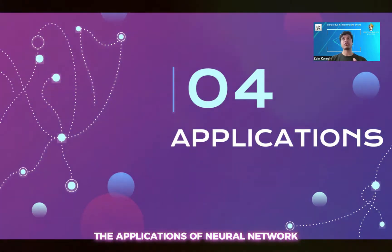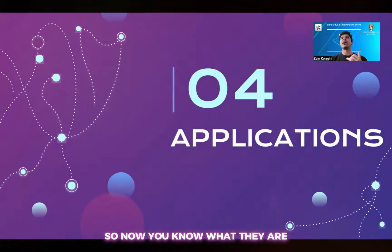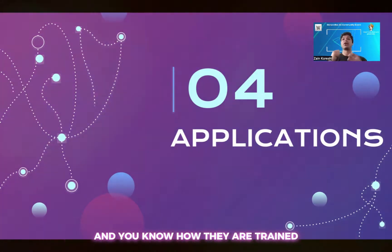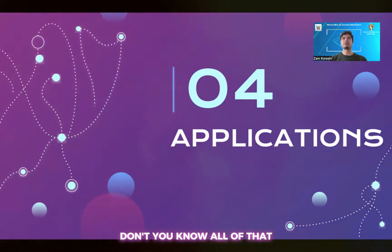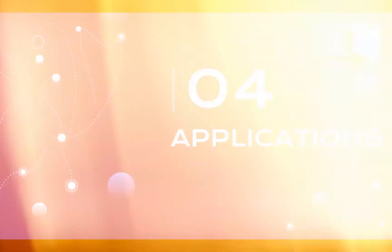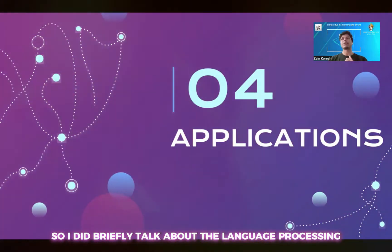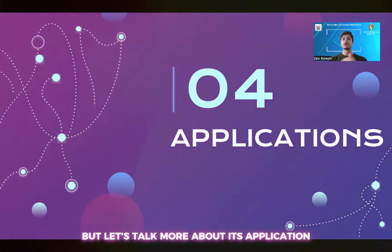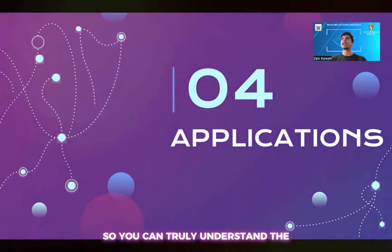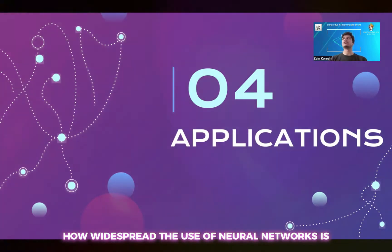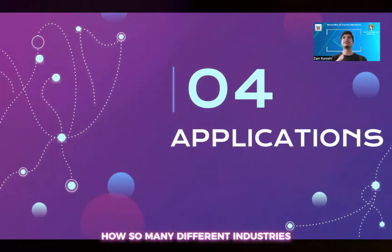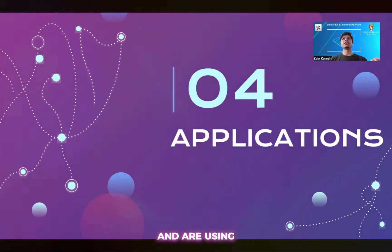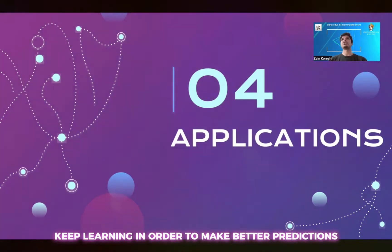I will now talk about the applications of neural networks. You know what they are, where they fit, how they work, how they're structured, the different types, and how they're trained. Now that you know all of that, why is it useful to you specifically? I briefly talked about language processing, audio processing, and video processing, but let's talk more about their applications so you can truly understand how widespread the use of neural networks is — how so many different industries, if not all, are using neural networks and deep learning to make better predictions and understand their data better.